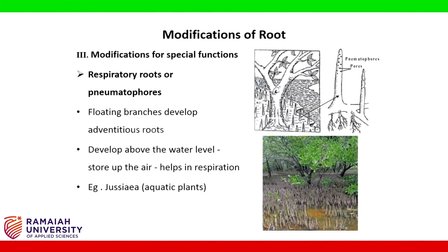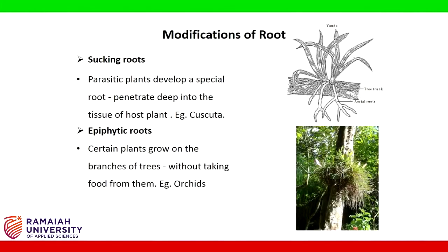Modifications for special functions. Respiratory roots or pneumatophores: floating branches develop adventitious roots that grow above the water level, store air, and help in respiration. Example: aquatic plants such as Rhizophora. Sucking roots: parasitic plants develop a special root which penetrates deep into the tissue of the host plant. Example: Cuscuta. Epiphytic roots: certain plants grow on the branches of trees without taking food from them. Example: orchids.